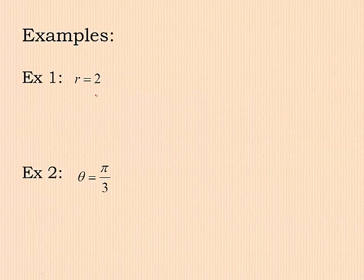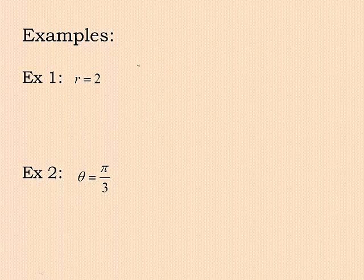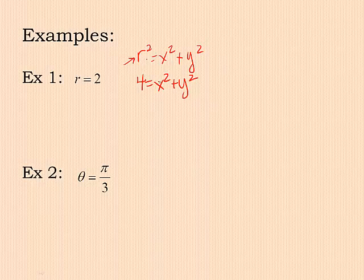For example, number one, r equals two. If I look at my four conversion equations, I know I have one that says r squared equals x squared plus y squared. If r is two and I plug that in, two squared is four. I now have an equation that just has x and y. I no longer have r or theta.